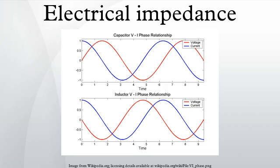Resistance versus reactance: resistance and reactance together determine the magnitude and phase of the impedance. In many applications the relative phase of the voltage and current is not critical, so only the magnitude of the impedance is significant. Resistance is the real part of impedance; a device with a purely resistive impedance exhibits no phase shift between the voltage and current. Reactance is the imaginary part of the impedance; a component with a finite reactance induces a phase shift between the voltage across it and the current through it. A purely reactive component is distinguished by the sinusoidal voltage being in quadrature with the sinusoidal current, meaning the component alternately absorbs and returns energy. A pure reactance will not dissipate any power.